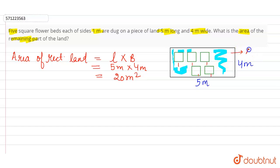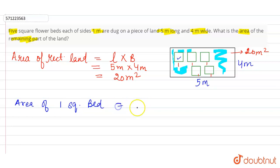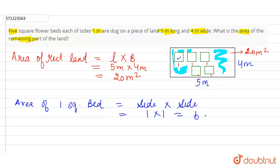The area of this rectangular field is twenty meter square. Now we have to find the area of each square bed. The area of one square bed equals side into side. The formula for the area of a square is side into side, and the side is one meter, so one into one equals one meter square.